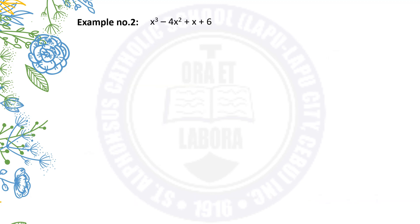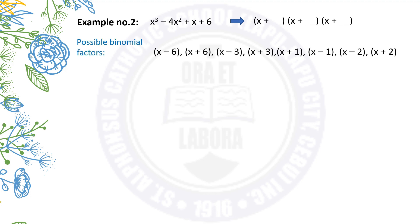For example number 2: x cubed minus 4x squared plus x plus 6. We are going to find the factors. The possible number of factors is 3. Since the constant term is 6, we consider its factors: 6 and 1, negative 6 and negative 1, 3 and 2, negative 3 and negative 2. Therefore, its possible binomial factors are x minus 6, x plus 6, x minus 3, x plus 3, x plus 1, x minus 1, x minus 2, and x plus 2. The product of the first terms must equal the leading term, and the product of the constant terms must equal 6.